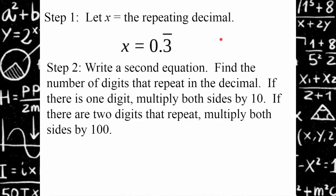Step 2, we're going to write a second equation. We're going to find the number of digits that repeat in the decimal. If there's one digit, you multiply both sides by 10. If there's two digits, you multiply both sides by 100. If three digits repeat, by 1000. So for every digit that repeats, you add a zero.